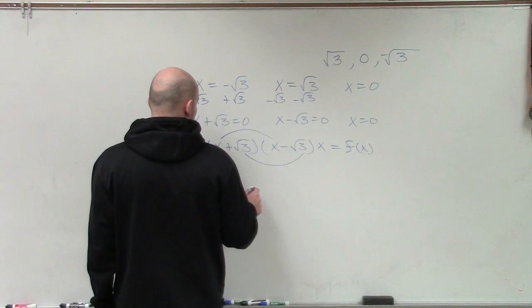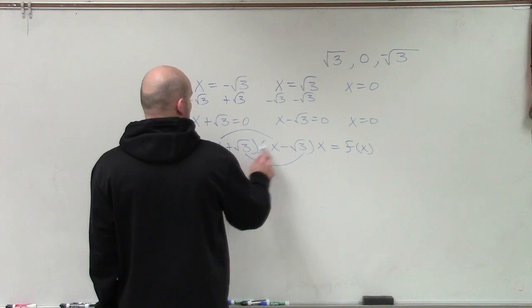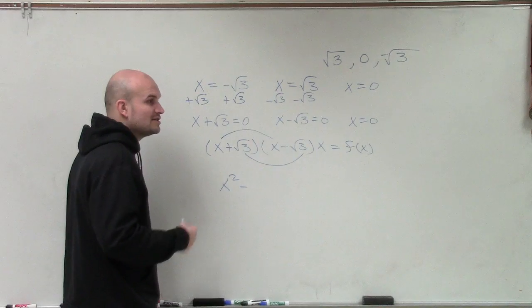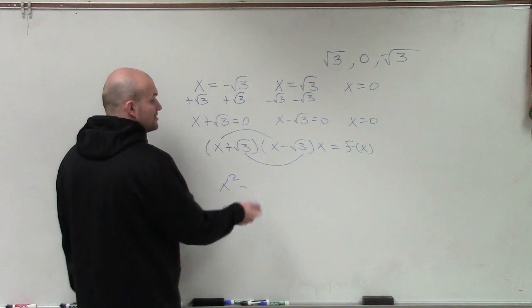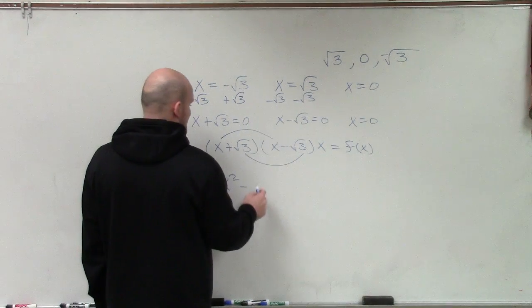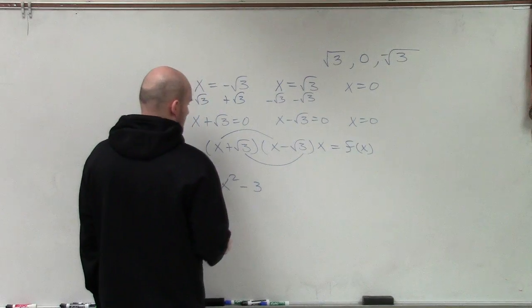Therefore, this is going to produce x squared minus the square root of 3 times the square root of 3 is going to be the square root of 3 squared, which would just be 3. But it's a positive times a negative, so it's going to be a negative 3.